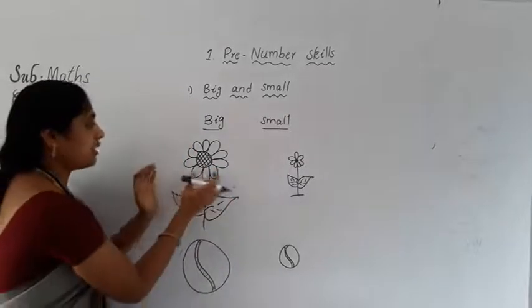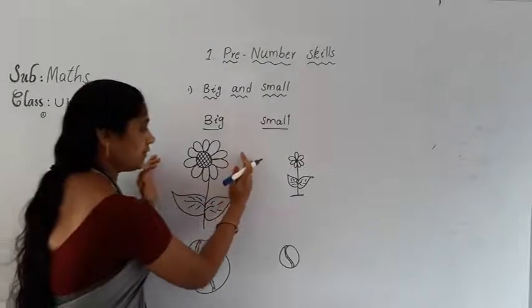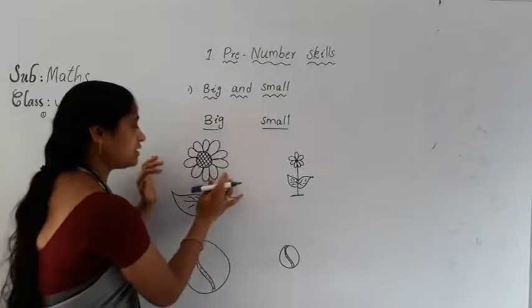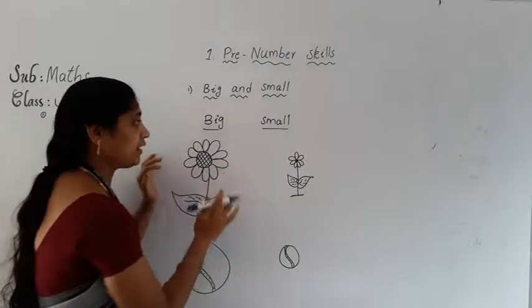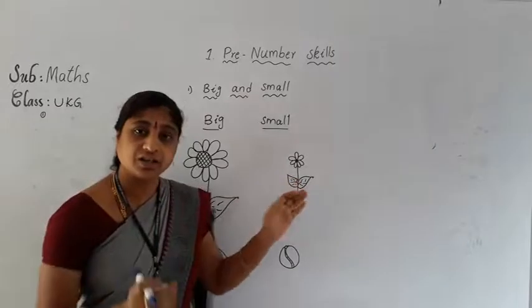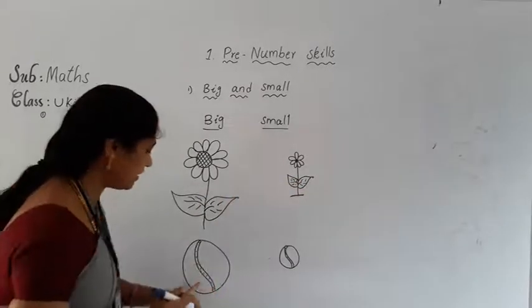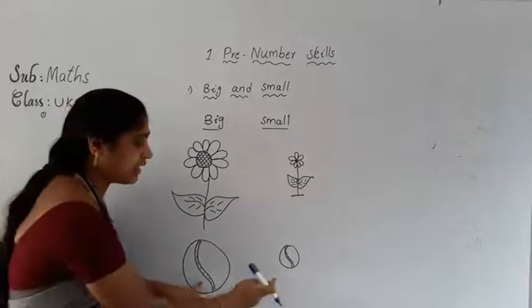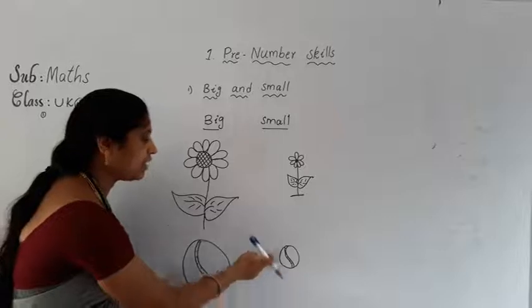Here also same. Here big flower — this is the big flower, means this one is the big. Here small, small. And here small, and here also. This ball is big and here small.